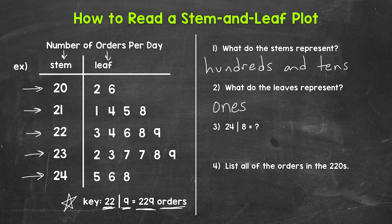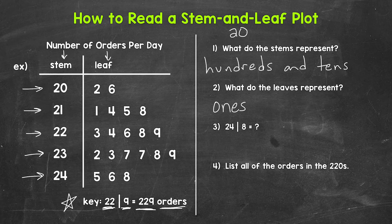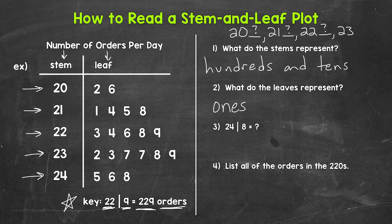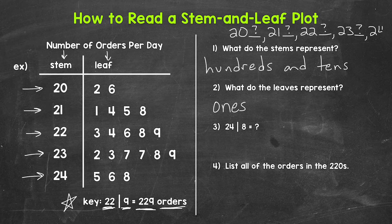Think of the stems like this. So our first stem of 20, the hundreds place and tens place. And then the leaves will go in the ones place. Then we have the stem of 21 and then the leaves will go in the ones place. Then we have the stem of 22 and then the leaves will go in the ones place, then the stem of 23 leaves go in the ones place, and then lastly the stem of 24 leaves go in the ones place.